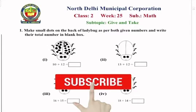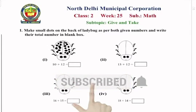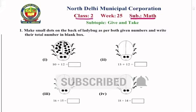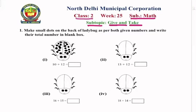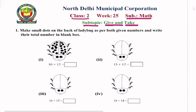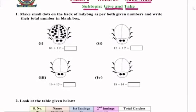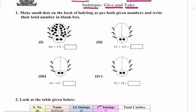Hello students, today in Class 2 our subject is Math and the subtopic is Give and Take. Question number 1: make small dots on the back of the ladybug as per the given numbers and write their total number in the blank box. So we will start.